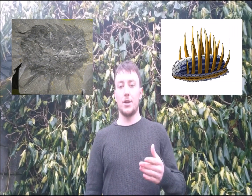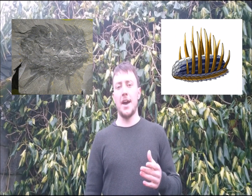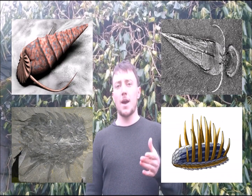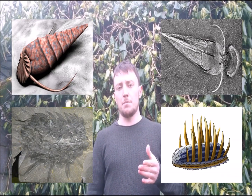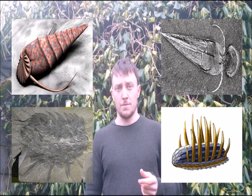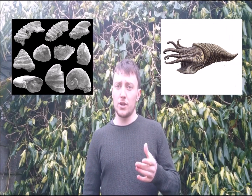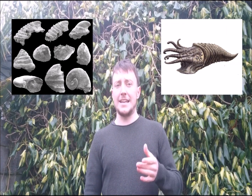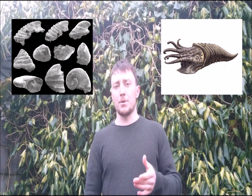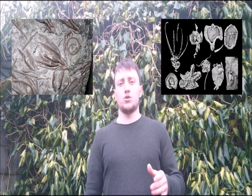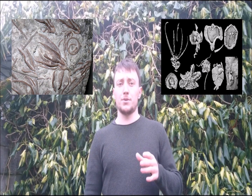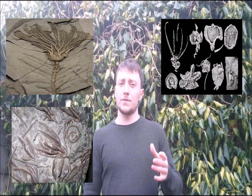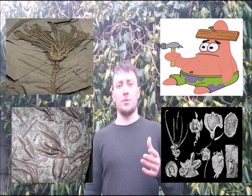The first mollusk-like creatures known as Halkieriids and mysterious conical shell animals known as Hyoliths possibly came about in the early Cambrian period as shown by the fossil record. Small shelly fossils were prominent in the fossil record in the late pre-Cambrian and early Cambrian periods also. The earliest generally accepted echinoderm fossils also appeared around this time.